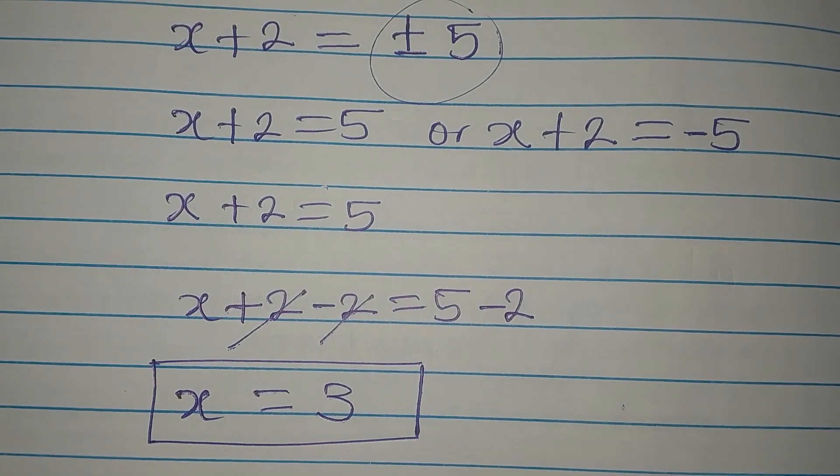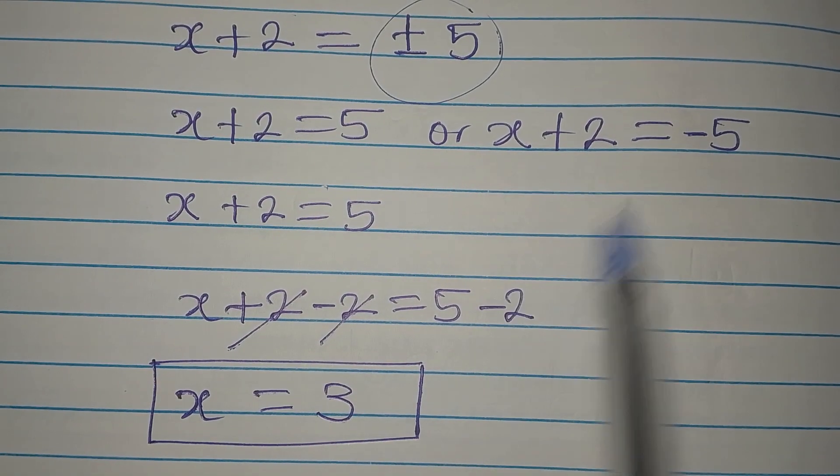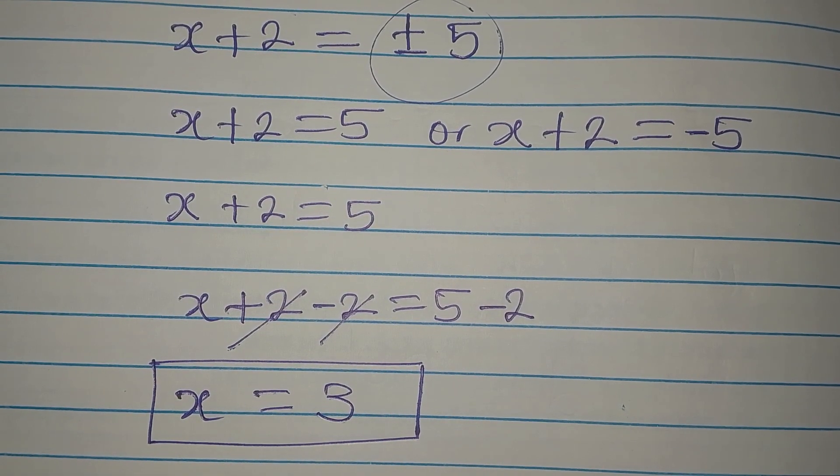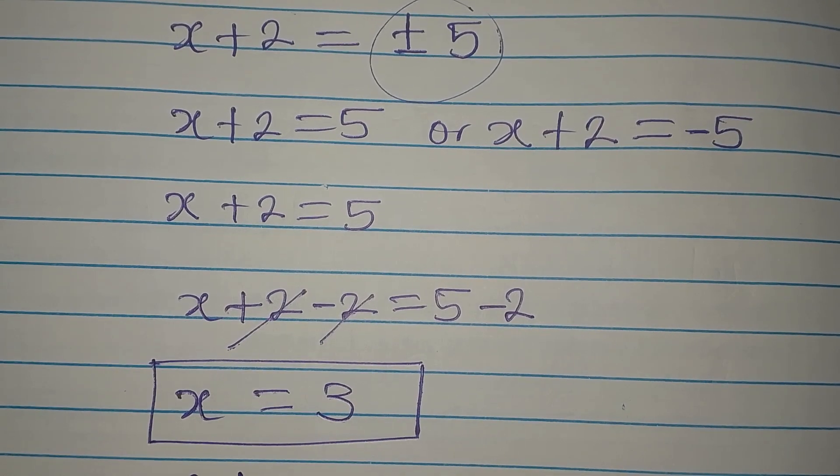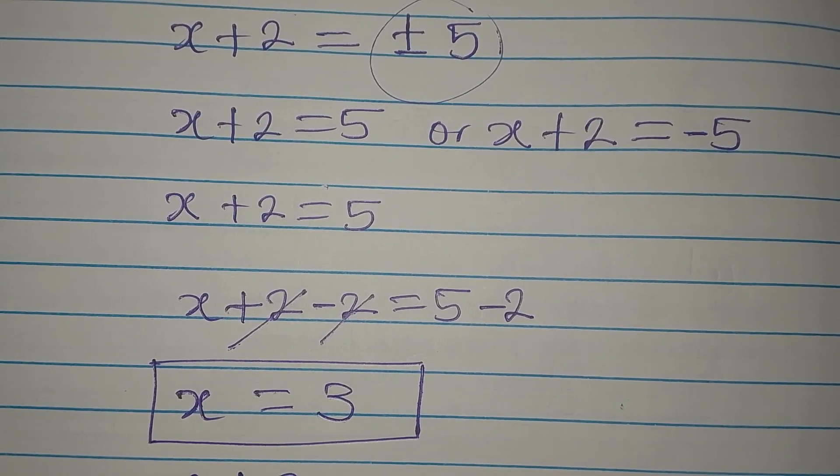The next is to bring this down here and continue. So I'm going to pick x plus 2 equals negative 5.